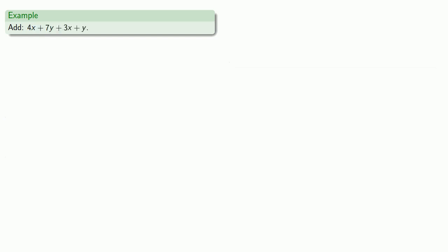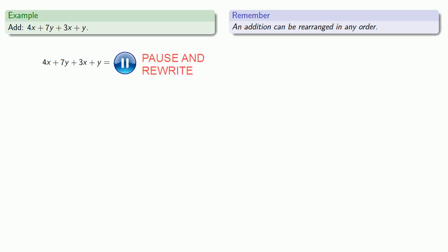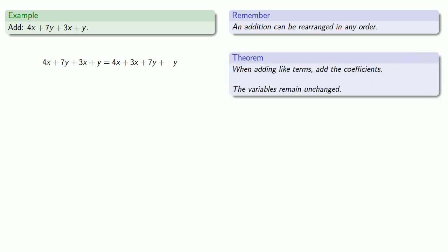Let's take a look at 4x plus 7y plus 3x plus y. While we don't need to do it, we can rearrange the addition in any order that we want to. So let's rewrite this so our like terms are at least close to each other. When we add like terms, we want to add the coefficients. So 4x plus 3x will be 4 plus 3, that's 7, and the variable remains unchanged, x.